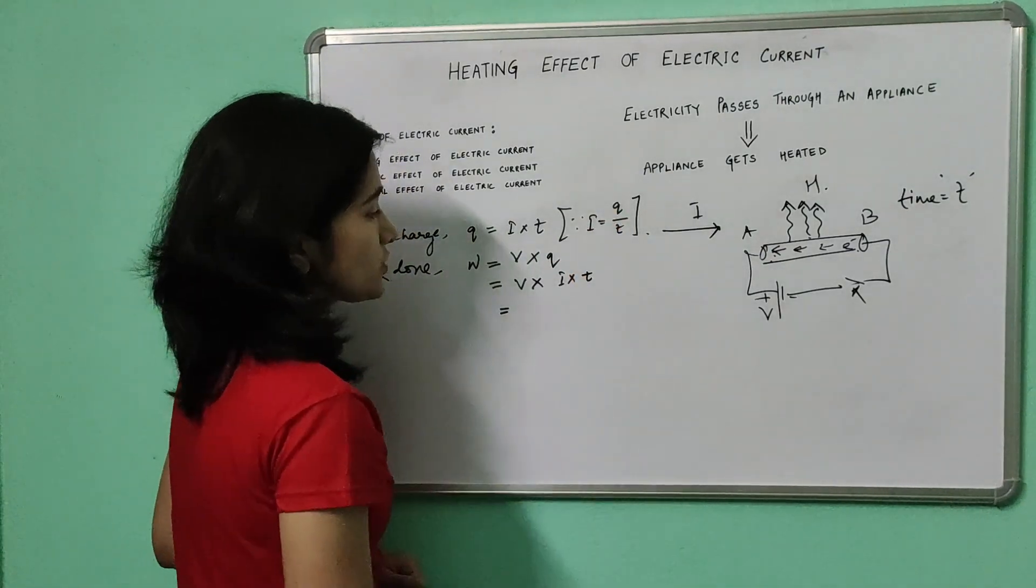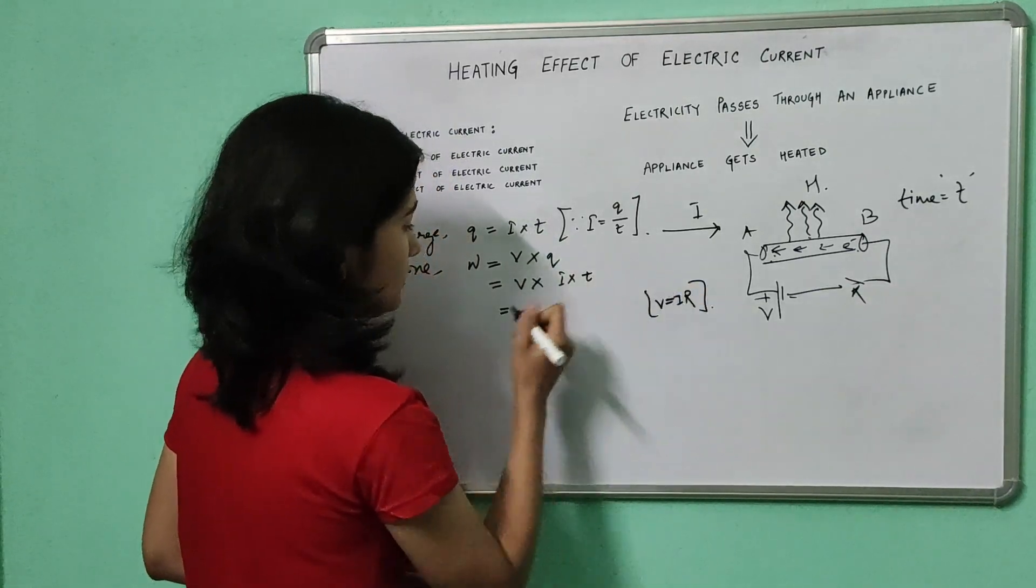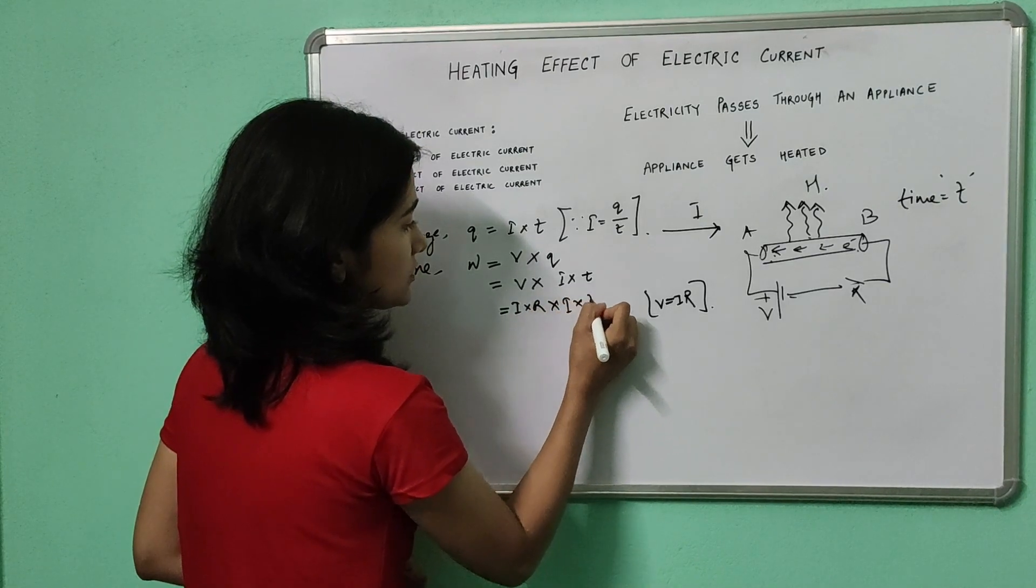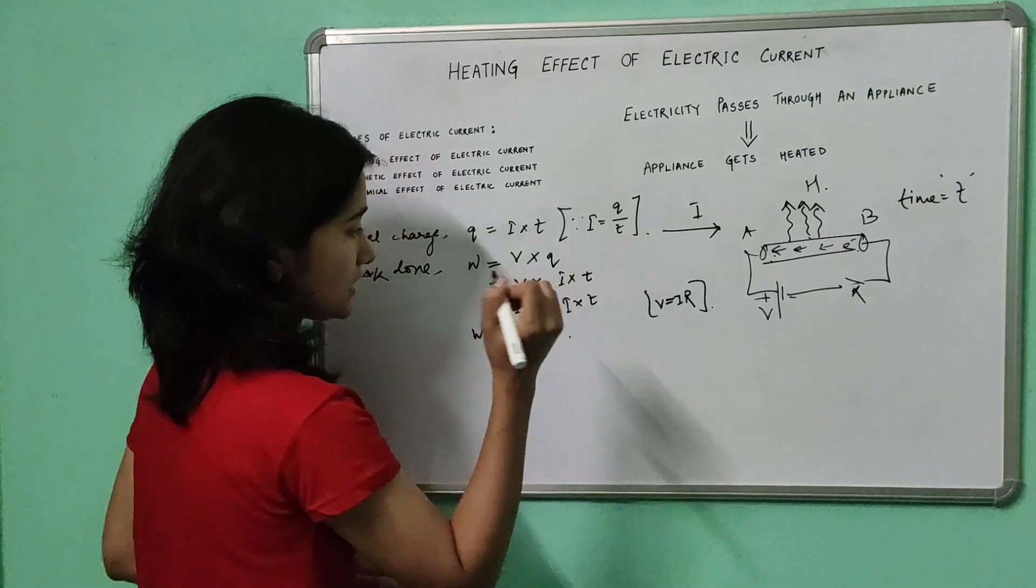And from Ohm's law we know that V is equal to I into R. So we can write I into R into I into T. So we write W is equal to I square R T.